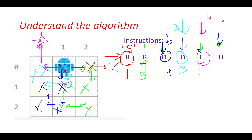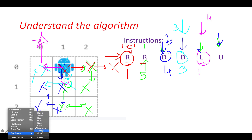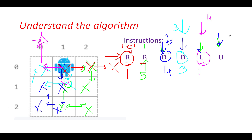For the last starting position at index 5, the instruction is U. The robot starts and immediately moves out of the grid, so the answer is 0. The final output array is 1, 5, 4, 3, 1, 0, which matches our expectation.